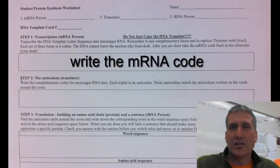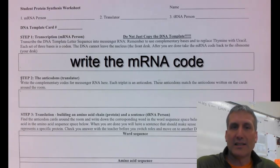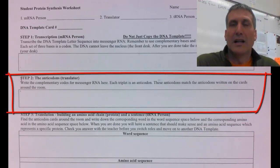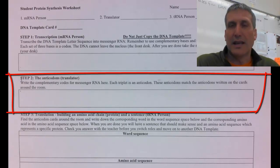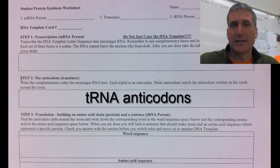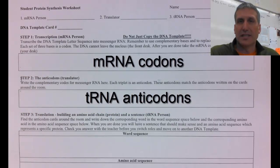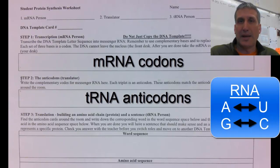Once you have the messenger RNA code, you take it back to your lab station and the translator does step two. The mRNA is broken into three base pairs that make up codons. The translator will figure out the anticodons that match with the codons from step one. Remember, the anticodon is found on the tRNA, so you need to use the RNA base pairing rules.